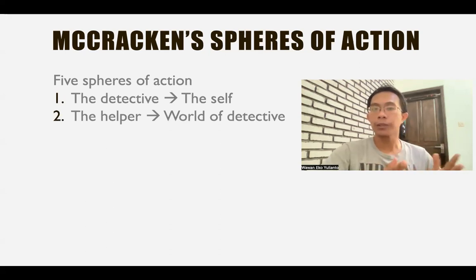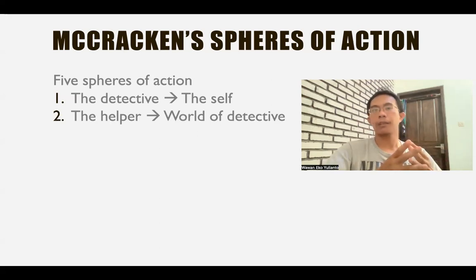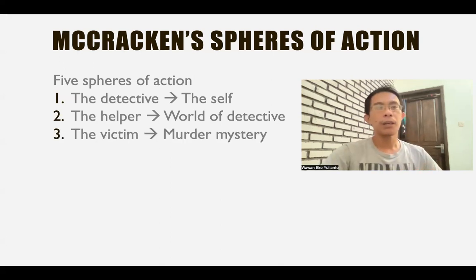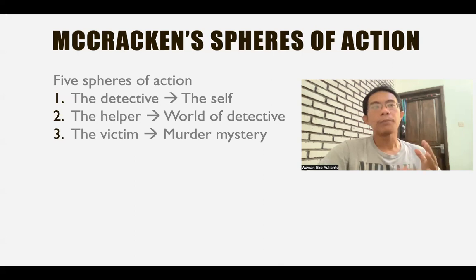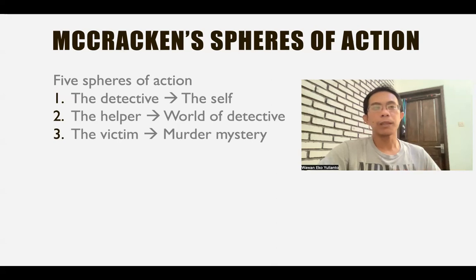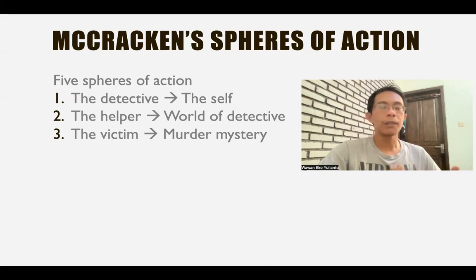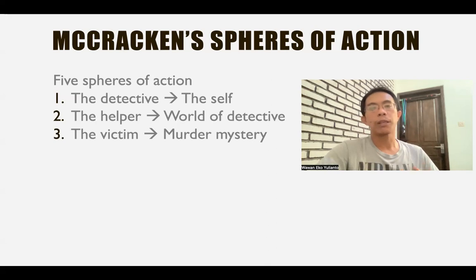The helper represents the world of the detective. From the kind of helper we have, we can see what kind of world the detective lives in. Then the victim — from the victim, you can find what kind of crime there is and what kind of situation we are in. This is the mystery of the crime or the murder. Crimes don't happen to just any individual; sometimes they happen to individuals who are strongly related to the crime. If the person is involved in a personal case, the murder might be related to that. If the person is wealthy, the crime is usually related to wealth and so on.